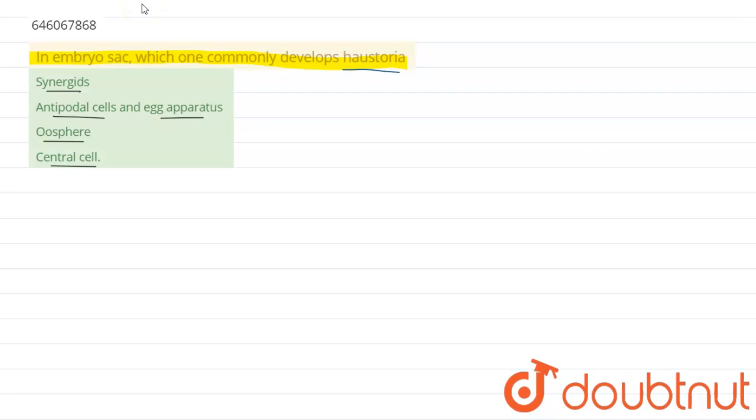First, we start with what is haustoria. Haustoria or haustorial means it's a projection or outgrowth. It is a type of projection or outgrowth, and this outgrowth can penetrate into other tissues and absorb nutrients.